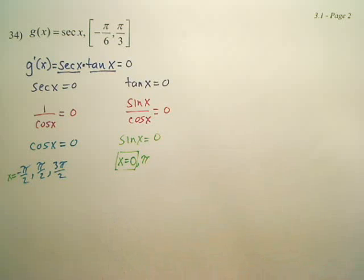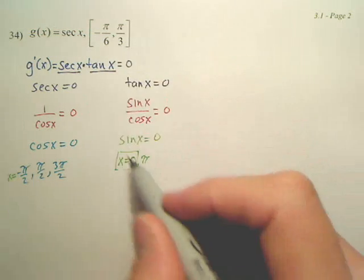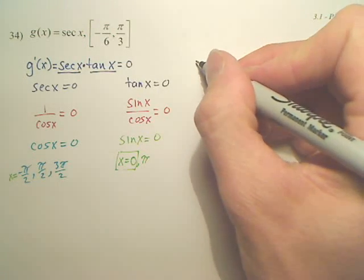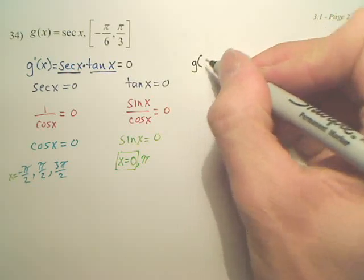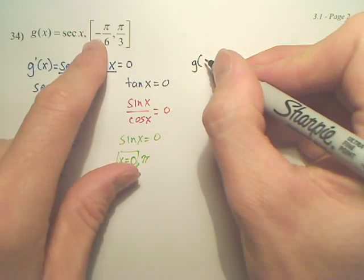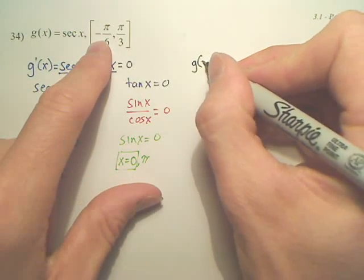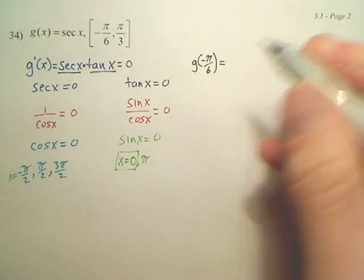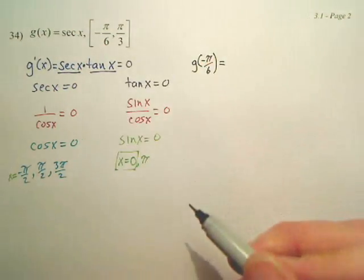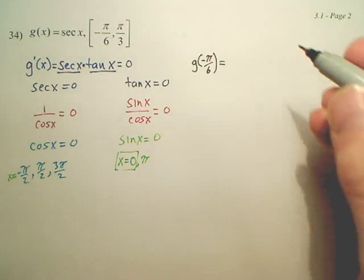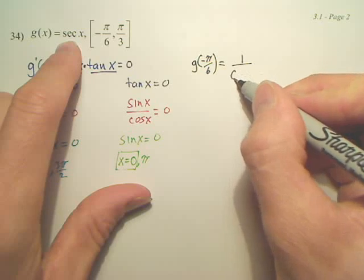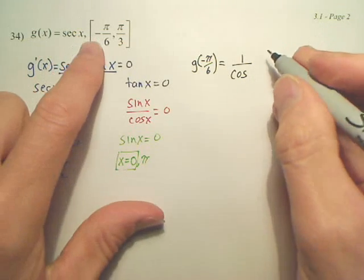How do we find absolute maxes and mins? We just plug in these three values into the original — into secant. Be careful, a lot of people mess up and plug into the wrong one. So let's start off with the negative endpoint, then we're also going to plug in zero and pi over three. We plug them into secant — can I change secant to one over cosine? A little bit easier for most people.